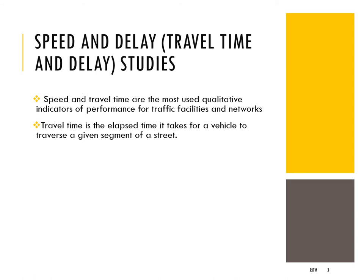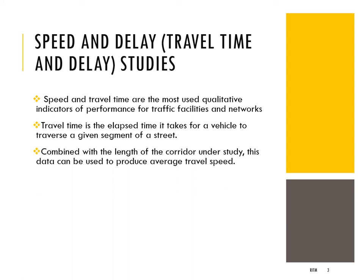Travel time is defined as the amount of time required to travel from one point to another on a given route. If you know the distance between two points, you can also get the speed — that is how speed is associated with travel time. Spot speed studies only looked at one point, at that instant. We were not interested in speed variation throughout the journey or additional time spent due to delays.